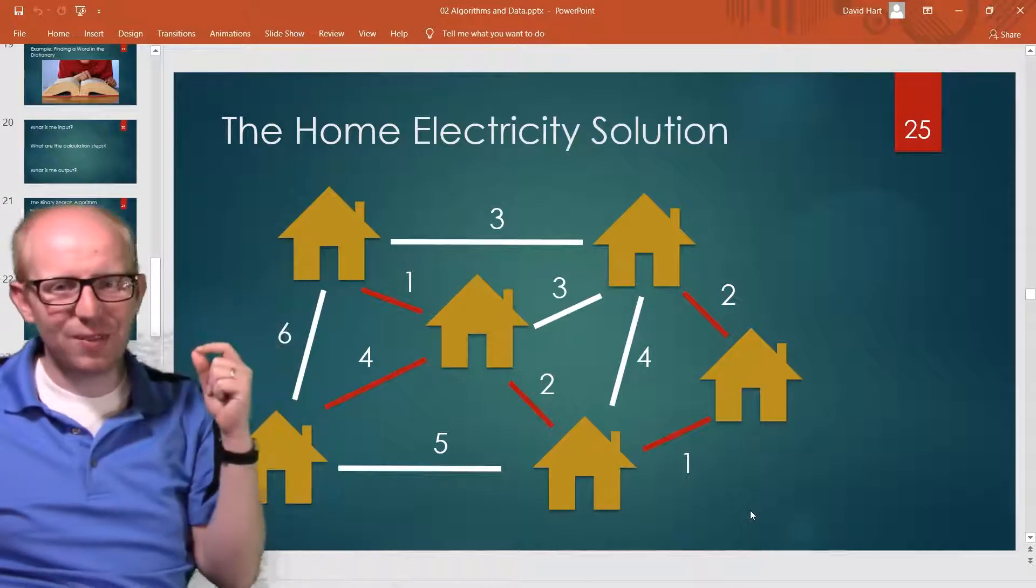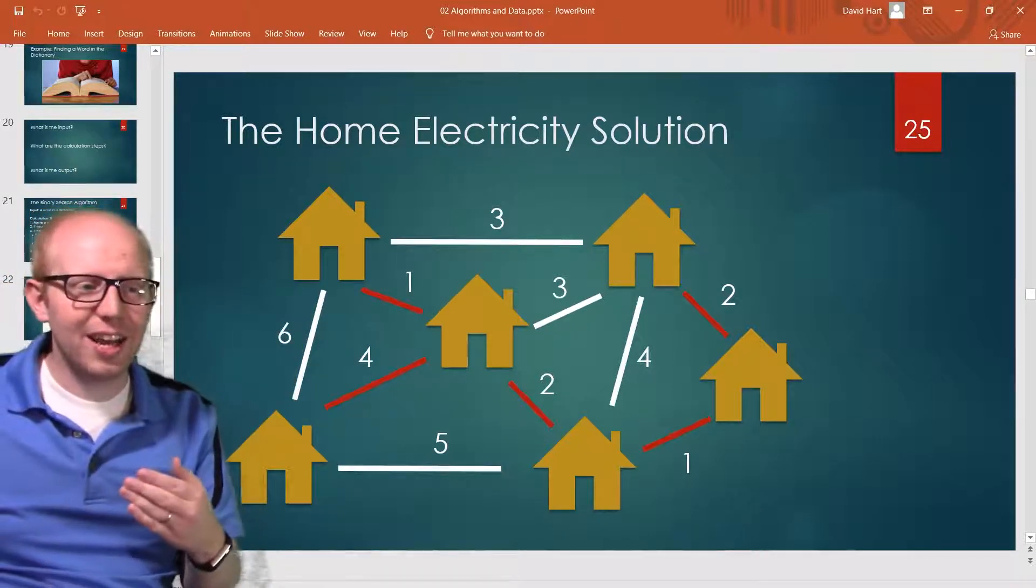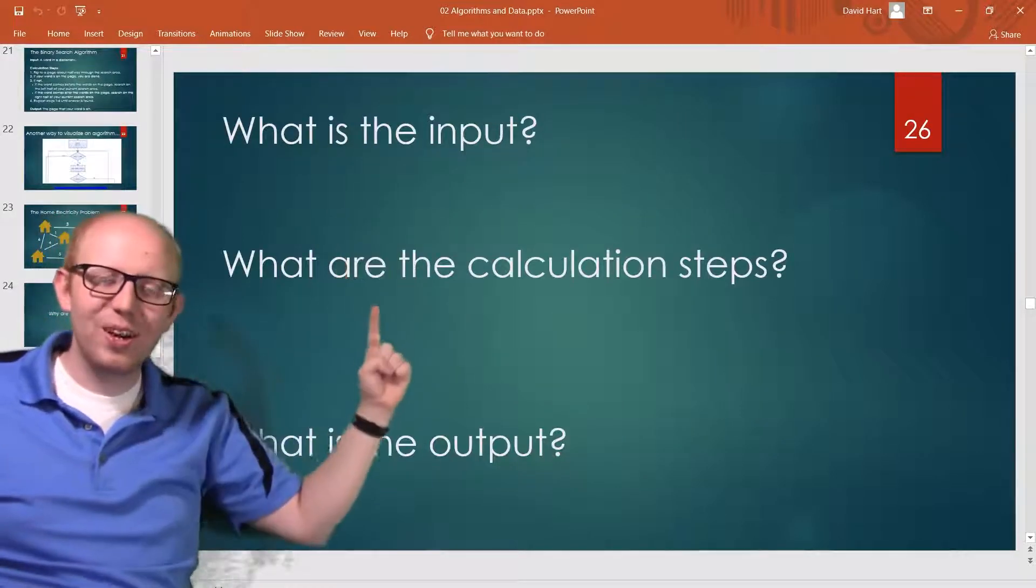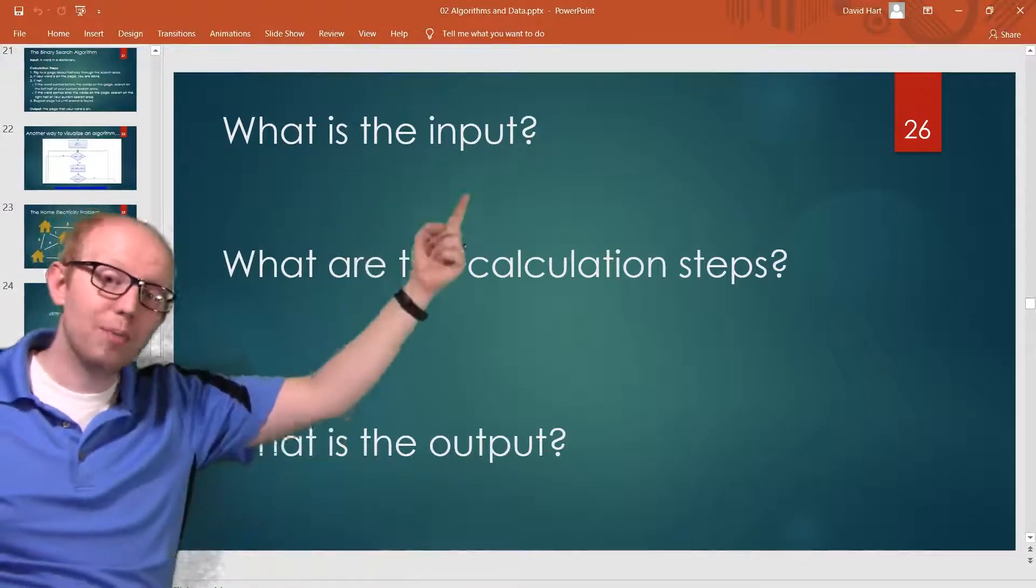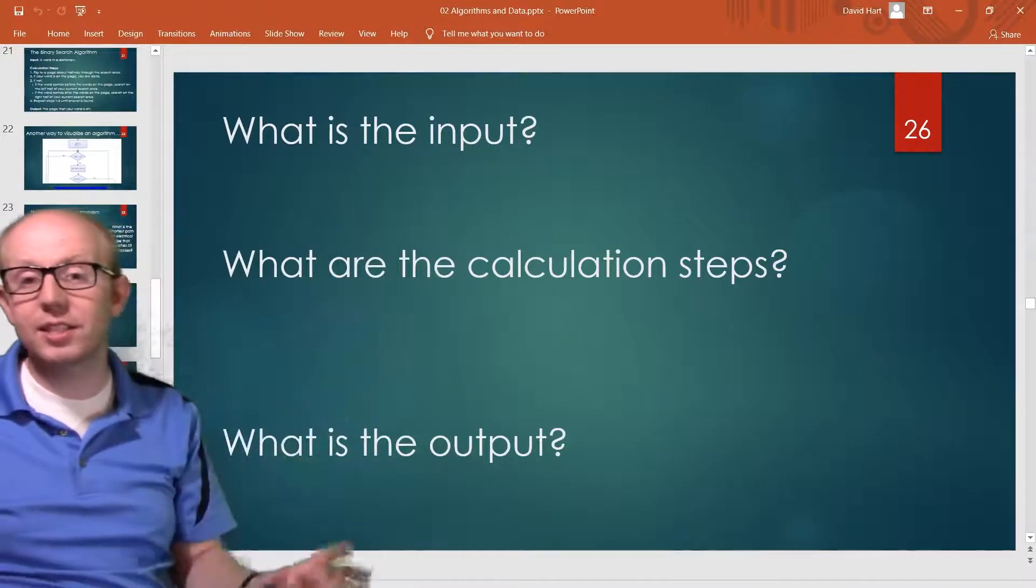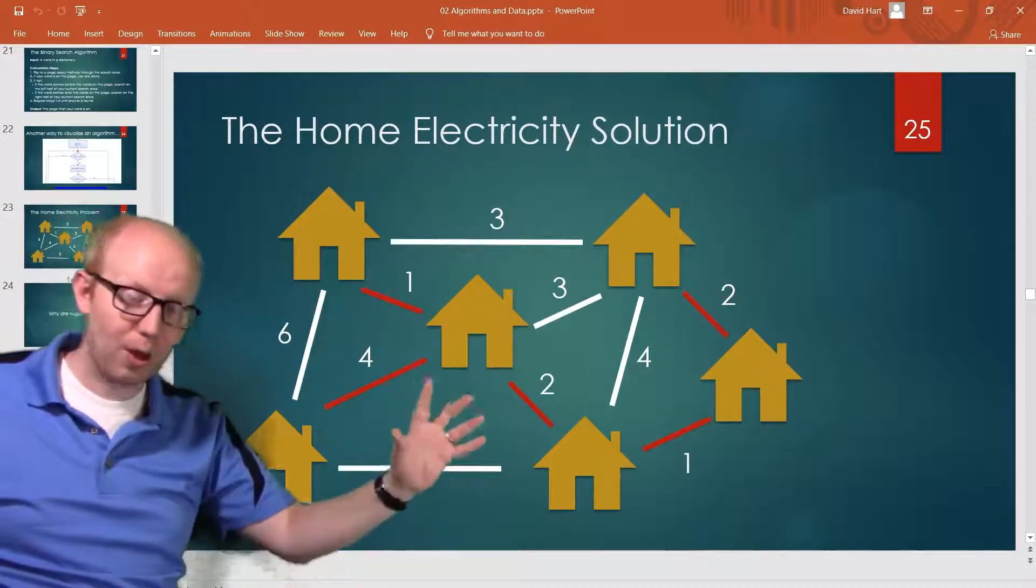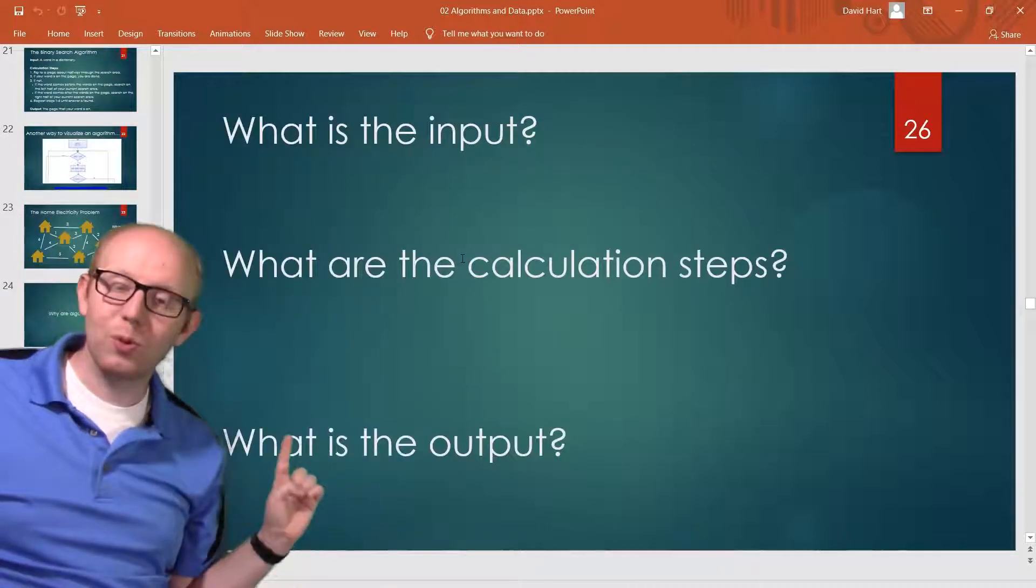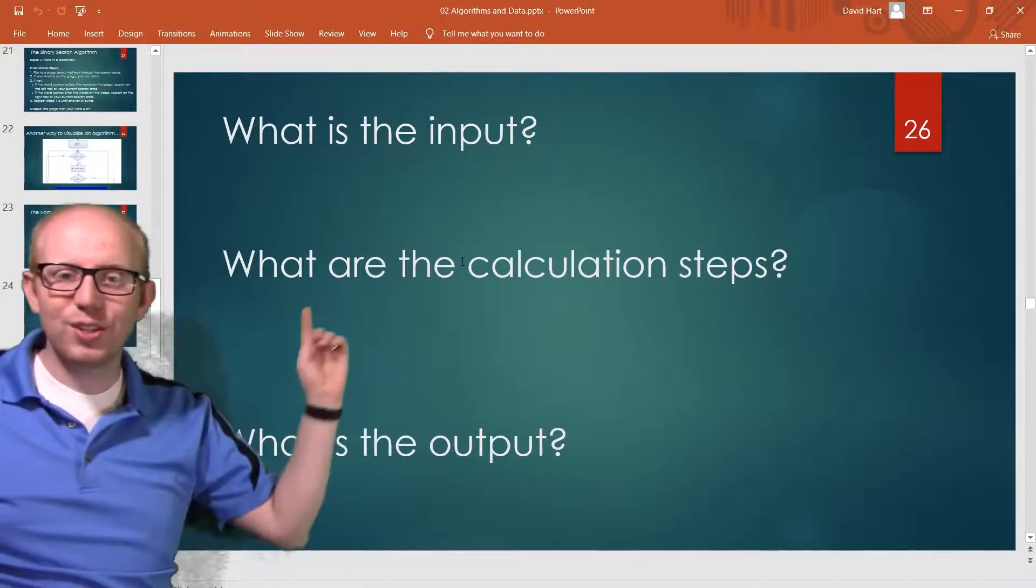So we want to look at again our algorithm. What was our input, what are our calculation steps, what was the output? So our input is a set of houses and the distances between them—some kind of web of houses so we know how far the wiring would have to go. Our output is that we want to know the minimum wiring that we'll need, the best way to connect them.